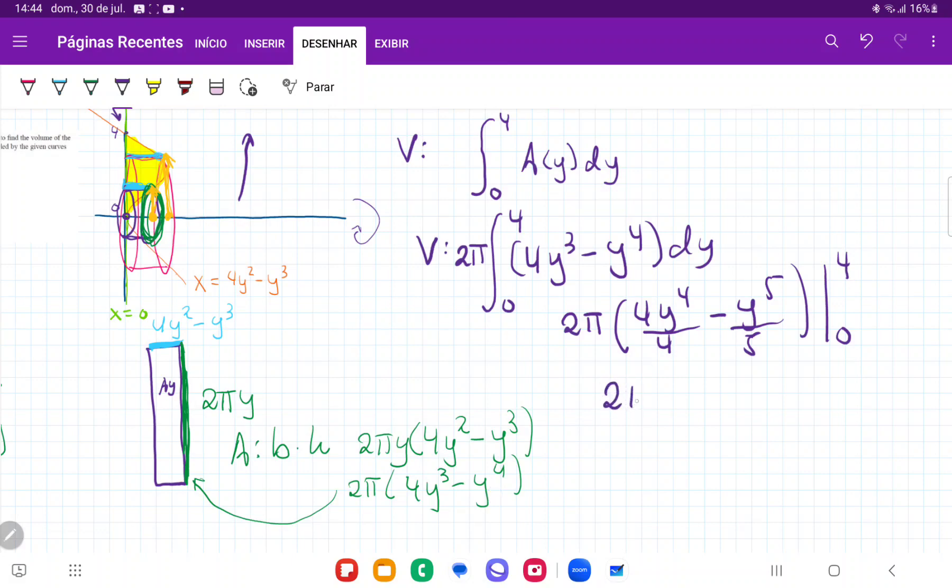So this is the same thing as 2 pi times let's see that 4, 4 cancels. So that is 4 to the power of 4 minus 4 to the power of 5 over 5. That's the upper boundary and the lower boundary. We don't care about it because it's just going to go to zero, right?